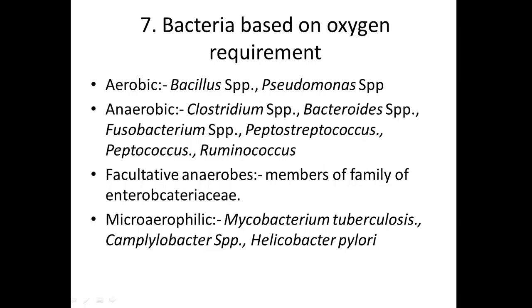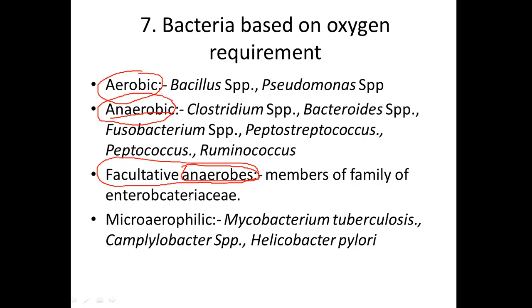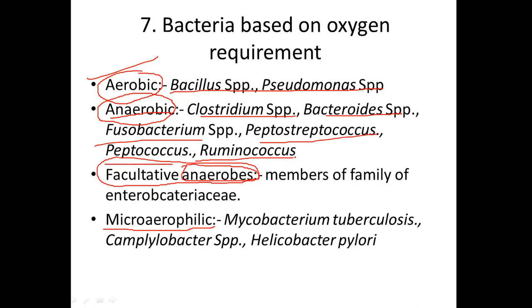They will also ask about the types of bacteria based on oxygen requirements. There are four types: aerobic (needs oxygen for growth), anaerobic (does not need oxygen; inhibited by oxygen), facultative anaerobes (primarily anaerobes but can tolerate oxygen and grow), and microaerophilic (needs very small concentrations of oxygen). Aerobic bacteria include Bacillus and Pseudomonas. Anaerobic bacteria include Clostridium species, Bacteroides, Fusobacterium, Peptostreptococcus, Peptococcus, and Ruminococcus.